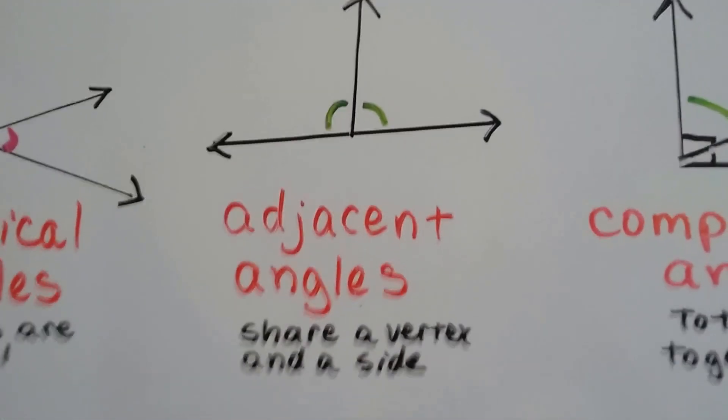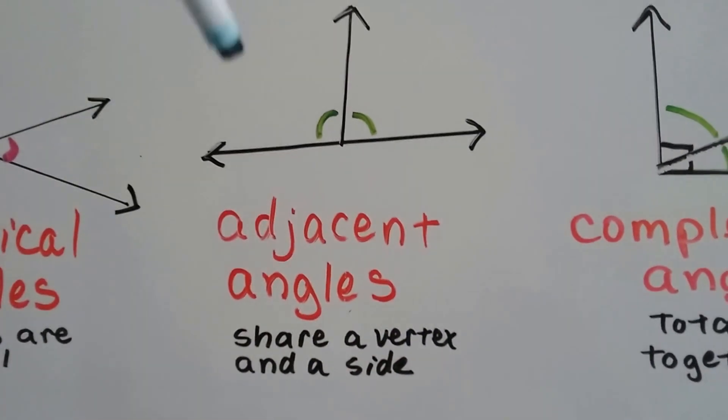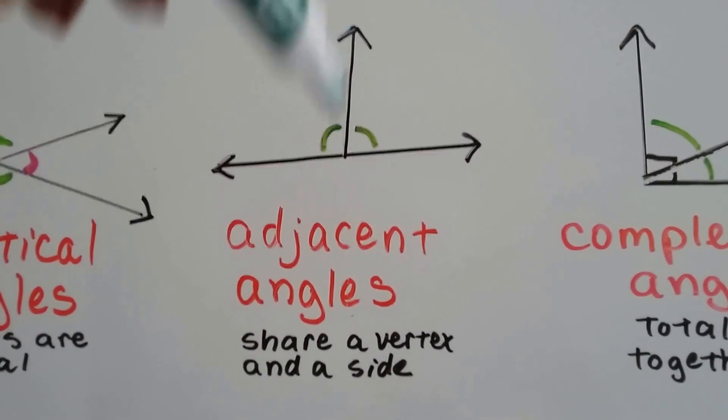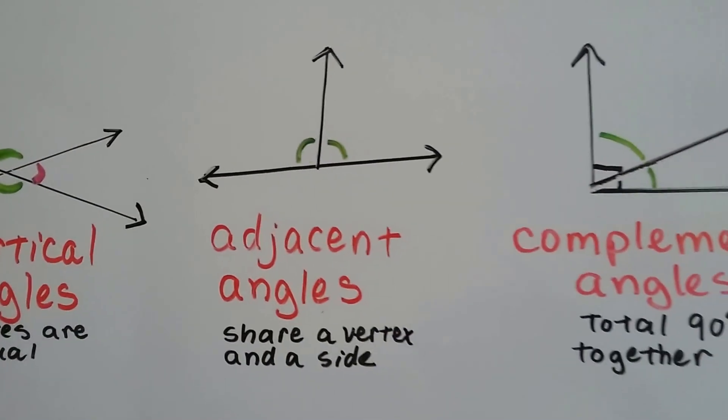Adjacent angles are angles that are next to each other and share one line side like that. And they don't overlap.